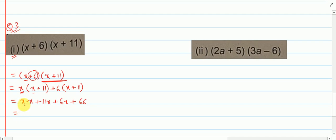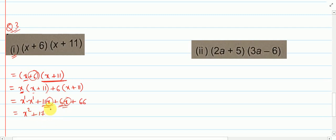Now x into x: power is 1 here and 1 here, base same, so powers are added and you get x squared. Then here you see both terms 11x and 6x are like terms — they have x. So we add the coefficients: 11 plus 6 becomes 17. And then plus 66.